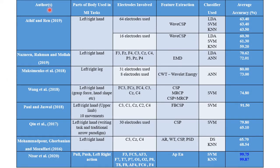A comprehensive literature review shows that many researchers have worked on classification of motor imagery tasks using left and right hand motor imagery, with different numbers of electrodes, different feature extraction methods, and different classifiers. The best classification accuracy seen so far is around 99.87 percent, reported by Nisar et al., using 14 electrodes with approximate entropy as the feature and SVM as the classifier.